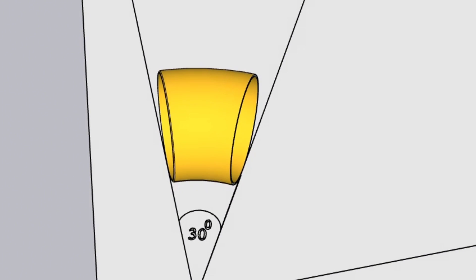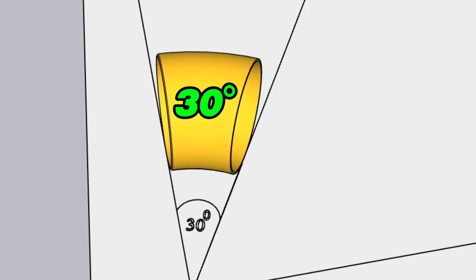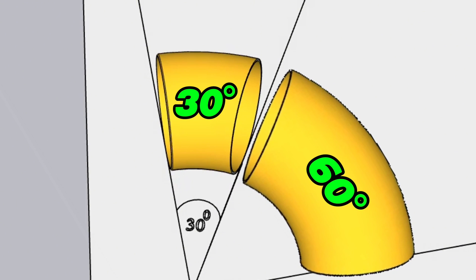After cutting the 30-degree elbow from the 90-degree elbow, the remaining portion will automatically remain a 60-degree elbow. As you can see, in this video we learned how to cut 30-degree and 60-degree elbows from a 90-degree elbow.